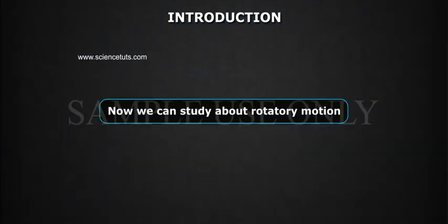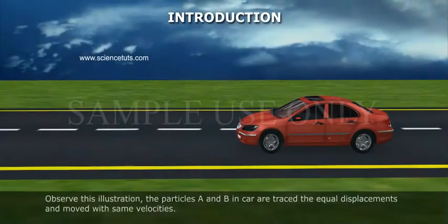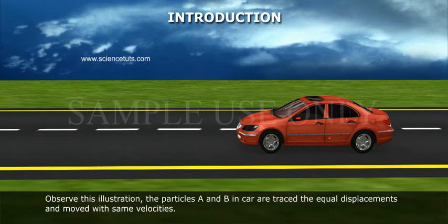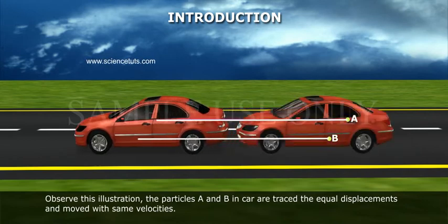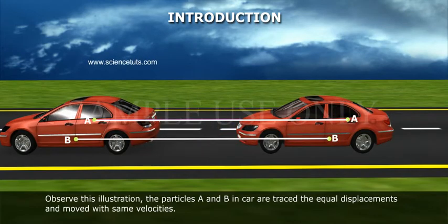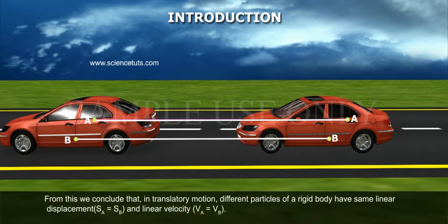Now we can study about rotatory motion. Observe this illustration. The particles A and B in car are traced the equal displacements and moved with same velocities. From this, we conclude that,